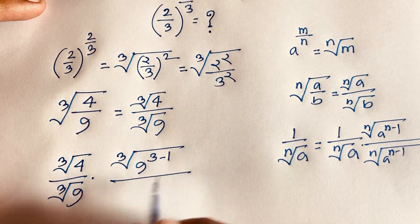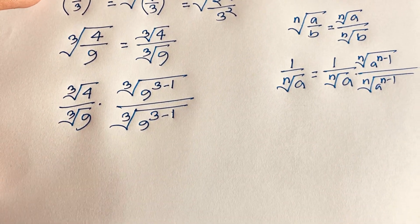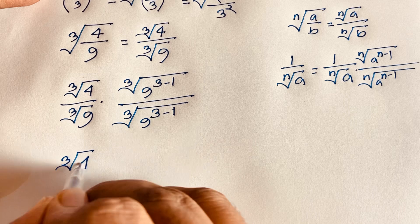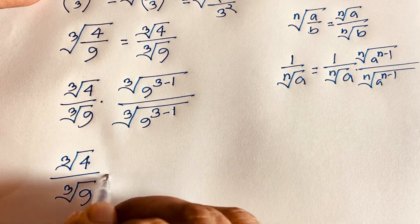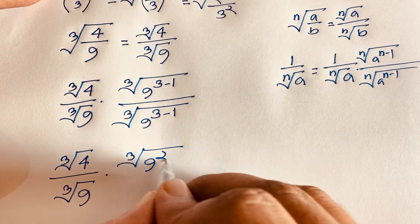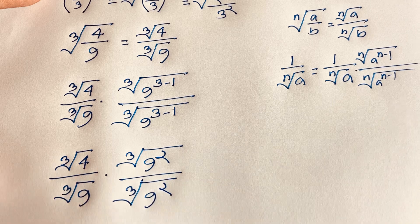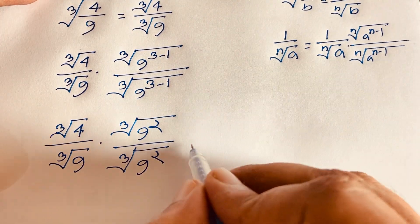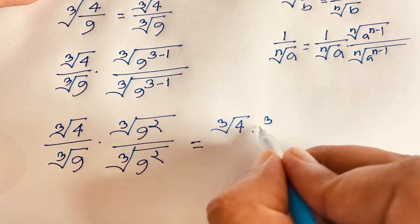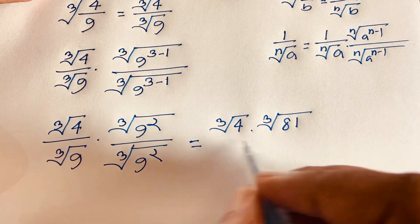So it becomes: cube root of 4 over cube root of 9, times cube root of 9 to the power (3 minus 1), which is 9 to the power 2. Since 9 squared equals 81, we get cube root of 4 times cube root of 81.